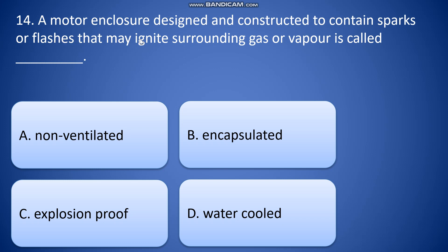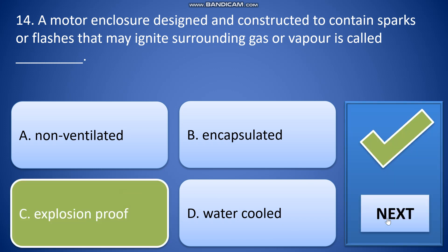A motor enclosure designed and constructed to contain sparks or flashes that may ignite surrounding gas or vapor is called: A: non-ventilated, B: encapsulated, C: explosion proof, and D: water cooled. So the answer will be C, explosion proof.